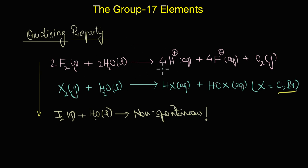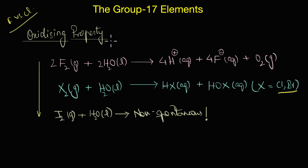To quickly summarize: we learned that halogens have the smallest size, highest ionization enthalpy, and electronegativity in their respective periods, and they also have the maximum negative electron gain enthalpy. The only exception was that of fluorine versus chlorine. We then looked at the various oxidation states of halogens, saw in which cases halogens show positive oxidation states, and we also discussed the oxidizing power of the halogens by taking the example of the reaction with water.